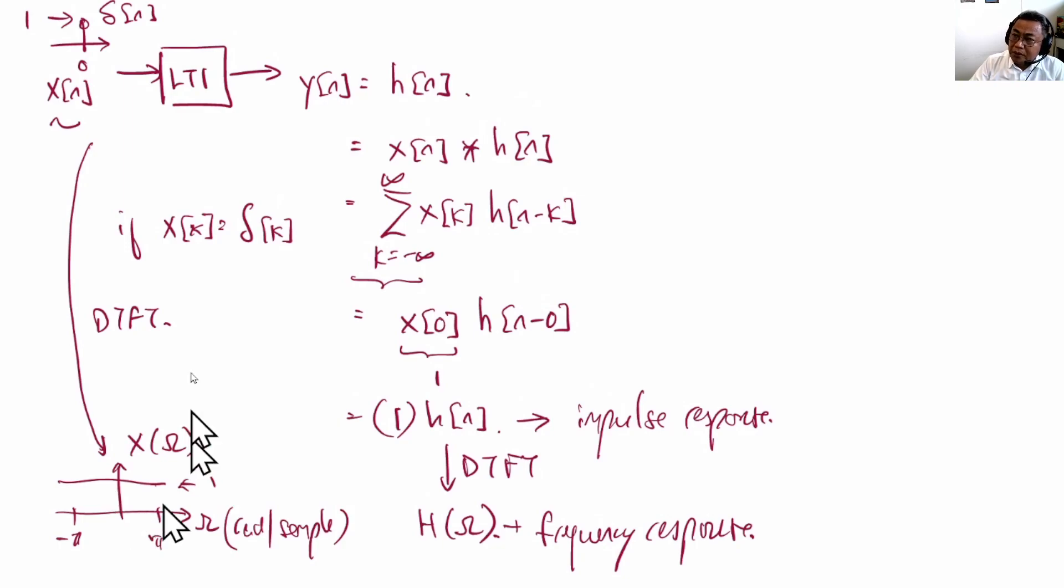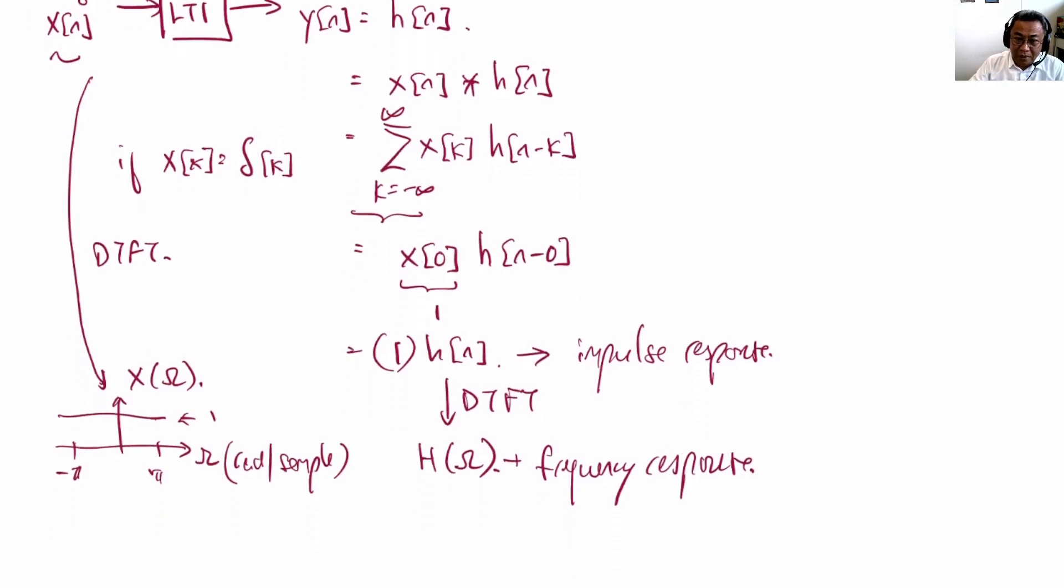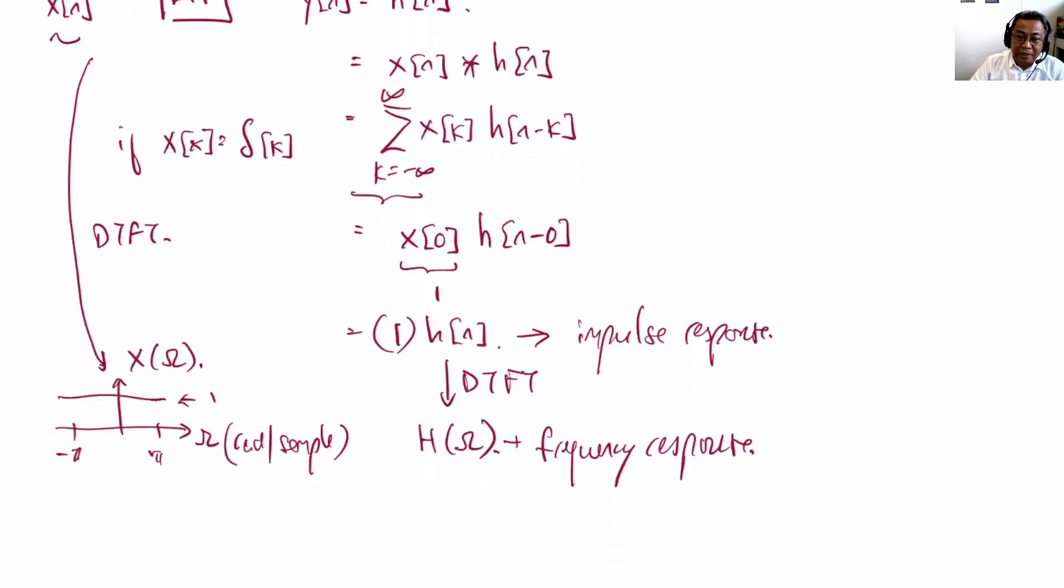This shows that the impulse actually is all frequencies with a constant magnitude of one and zero phase. So basically we are sending all frequencies into the system, and whatever comes out is called the frequency response.